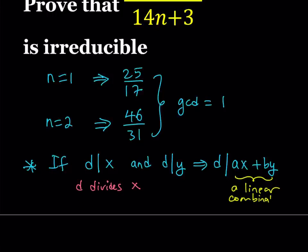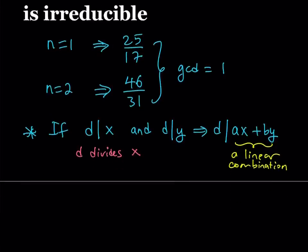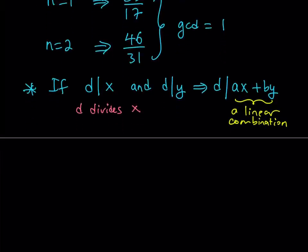And what this gives us is actually also very significant. This is called a linear combination of a and b. Now, linear algebra actually deals with linear combinations, but we're not going to get into depth here. This is called a linear combination of x and y. So, if d divides x and d divides y, then it also divides their linear combination.